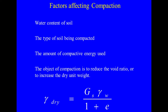The object of compaction is to reduce the void ratio and to increase the dry unit weight. The dry unit weight is equal to G_s · γ_w divided by (1 + e).